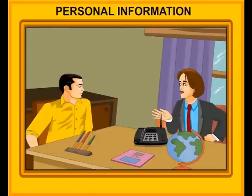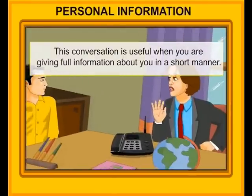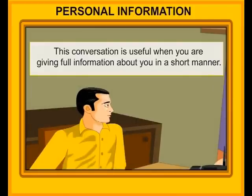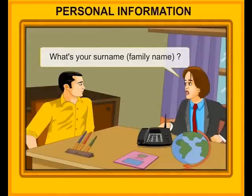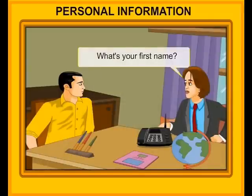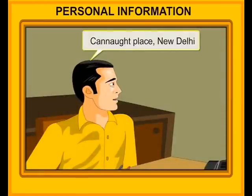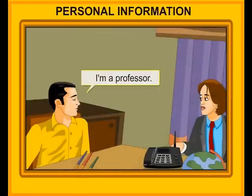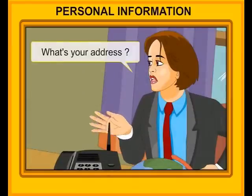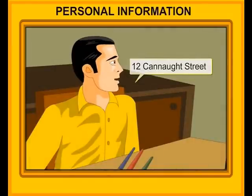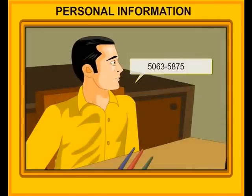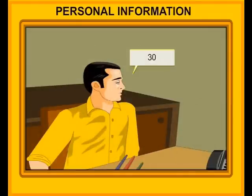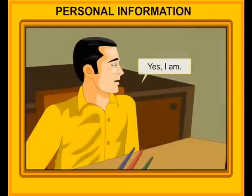Personal information. This conversation is useful when you are giving full information about yourself in a short manner. What's your surname — family name? Dikshit. What's your first name? Robin. Where are you from? New Delhi. What's your job? I am a professor. What's your address? 12 Cannot Street. What is your phone number? 5063 5875. How old are you? 30. Are you married? Yes, I am.